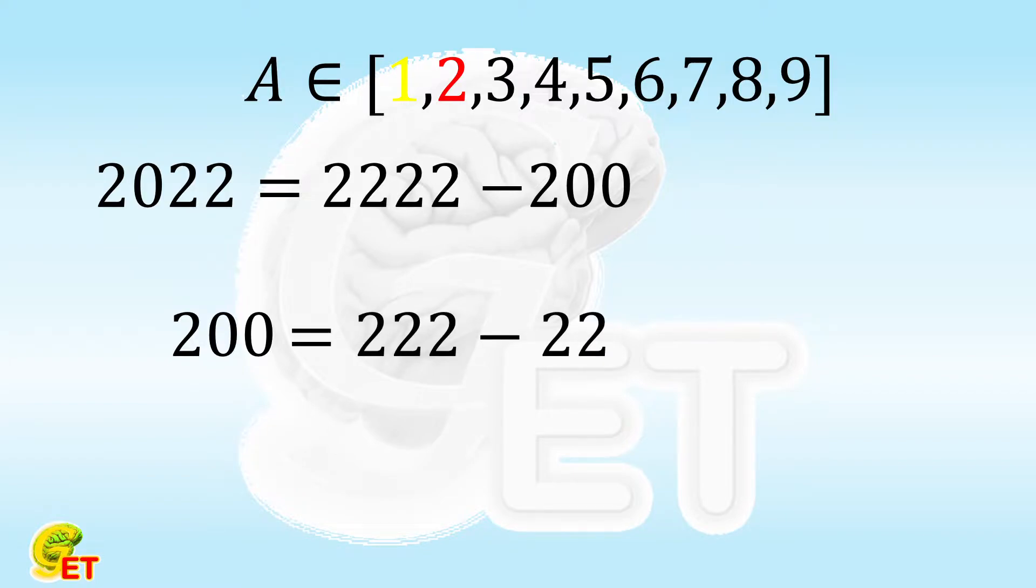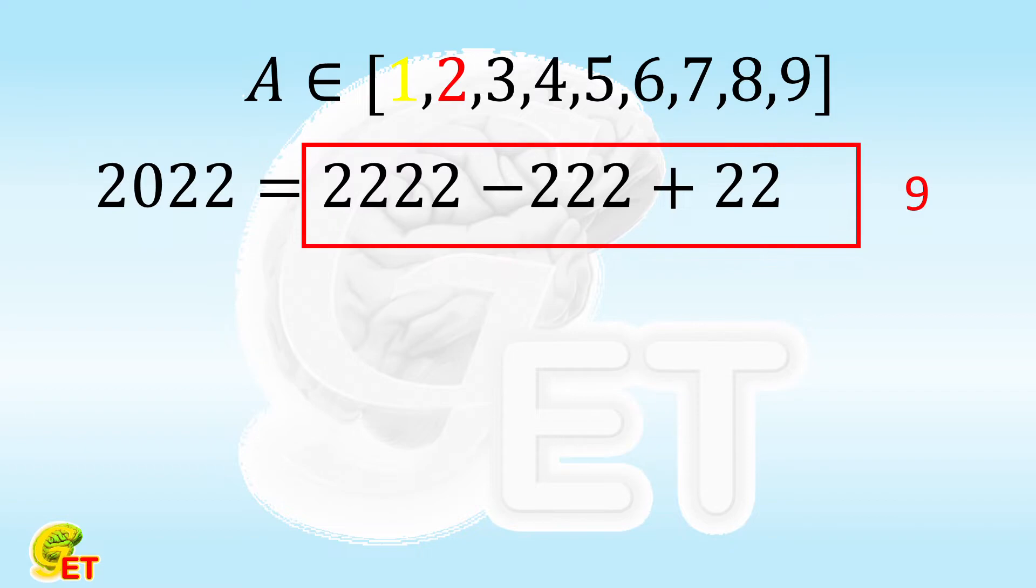In the previous case, after we used 1,111 minus 111 and plus 11, we have to multiply the result by 2. And this time we simply used 2,222 minus 222 and plus 22, and don't even need to multiply it by anything anymore. So we use 2 only for 9 times in total.